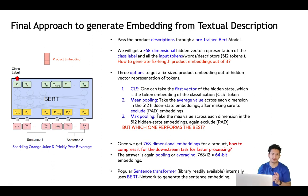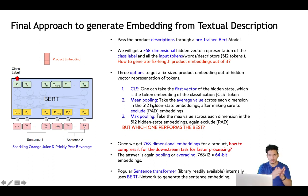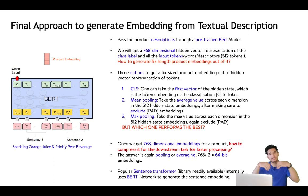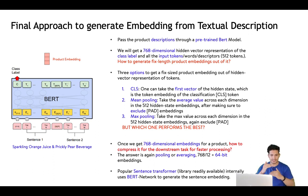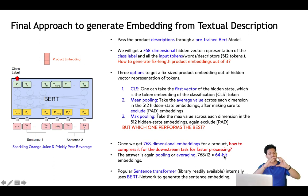We don't know which option performs best without trying, so we'll try all three and see. In my experience, mean pooling worked best, but all of them work pretty well. The vector representation is still 768 dimensions — if we want an even more condensed 64-bit representation, we can average groups of 12 dimensions: 768 ÷ 12 = 64. We take the average of each group of 12 dimensions into one, doing this for each group.